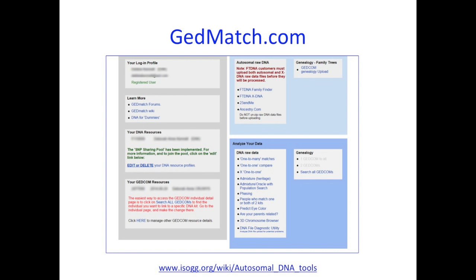I want to briefly mention GEDmatch — a free website I recommend everyone uses. Regardless of which company you've tested with, you can upload your results to this database. If you've come across someone who tested at 23andMe and you've tested at Family Tree DNA, you can put both results on GEDmatch and do all the comparisons. They've got a chromosome browser and all sorts of fancy tools, including a bewildering range of ethnicity population calculators — whether or not it means anything, it can still be fun.